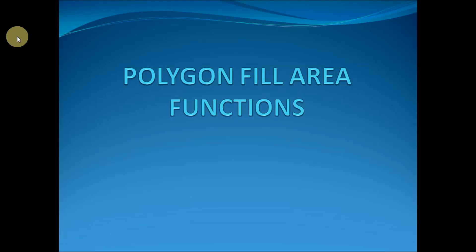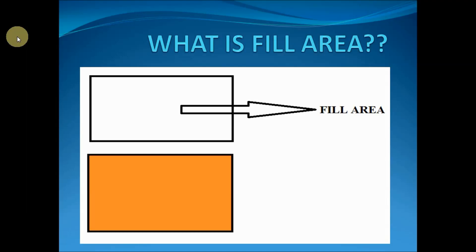A polygon is a closed object. To construct a polygon I need more than three vertices. Every polygon will have an area, and each polygon fill area can be filled with some color or a pattern. In this example I have constructed a rectangle polygon fill area, and I filled the rectangle polygon with the orange color.